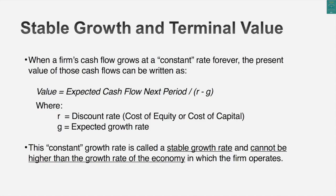Your choices are liquidation value or going concern value. The standard approach is the going concern approach, where you assume your cash flows grow at a constant rate forever. That's a very convenient way to estimate terminal value, but it can also get you into trouble. The number that usually gets valuations in trouble is the terminal value number. So I'm going to introduce four very simple rules to keep your terminal value in check, to keep it from running away with your valuation.